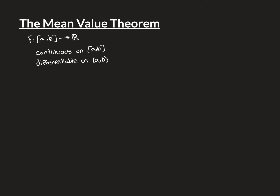The Mean Value Theorem starts with similar criteria to Rolle's Theorem. We have a function f on a closed interval from a to b, which is continuous on the entire closed interval and differentiable on the open interval from a to b. These are the weakest criteria needed. The one criterion from Rolle's Theorem we are removing is that the values of the function at the endpoints a and b were equal — we're not insisting on that here.